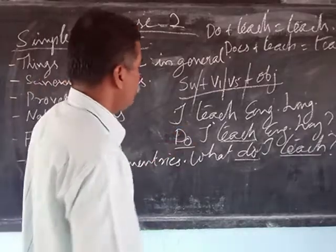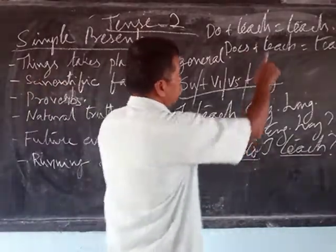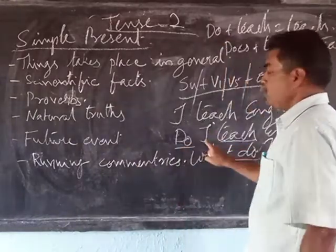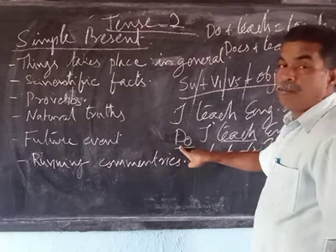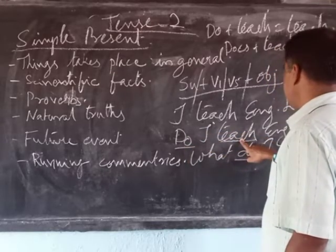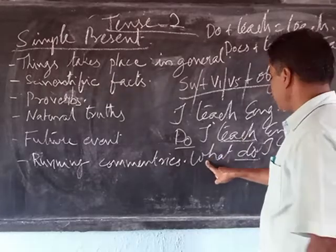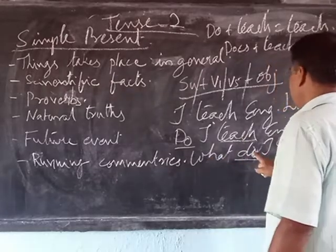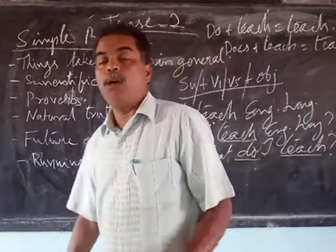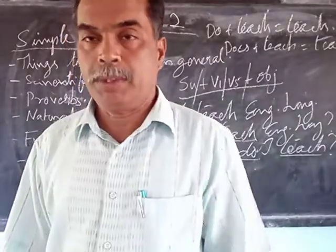To make a question, you split the verb 'teach' into 'do + teach' and put 'do' before the subject, keeping the remaining verb 'teach' after the subject. If you use a question word, it becomes 'What do I teach?' — the same format. This is how a question is formed in Simple Present Tense.